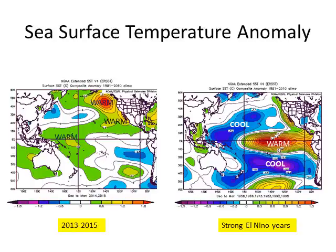Looking at sea surface temperature anomalies: in the past two years, all that warm water was already in place in the north Pacific and the Baja region. But in the strong El Niños like we're expecting this fall, all that warm water was located across the equator, and it also extended up into the Baja region thanks to those strong El Niños.